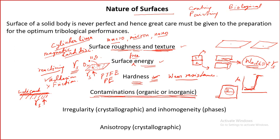Both organic and inorganic contaminants can be present. Organic contaminants can include hydrocarbons, oils, or grease from the industrial environment. Even a monolayer of organic contaminants — a single molecular layer — can affect the coefficient of friction and wear significantly. Inorganic contaminants can be oxides or very fine dust particles.